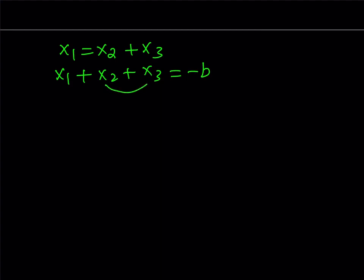And this gives me 2x1 is equal to negative b, and if you divide both sides by 2, you get x1 is equal to negative b over 2. So, we got one of the solutions in terms of the coefficients, which is cool.